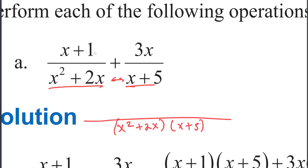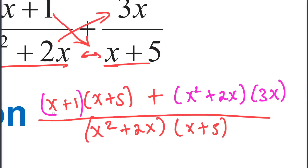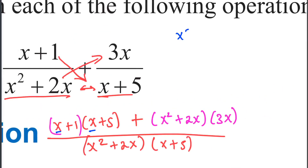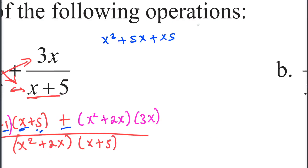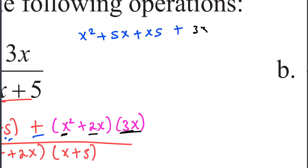This gives x plus 1. So the denominator is 5. We expand: x squared plus 2x times 3x. Then x plus 1 times x plus 5. We get x times 6, which is x squared, no — x times x plus x.